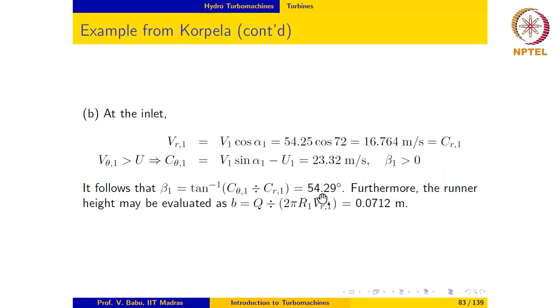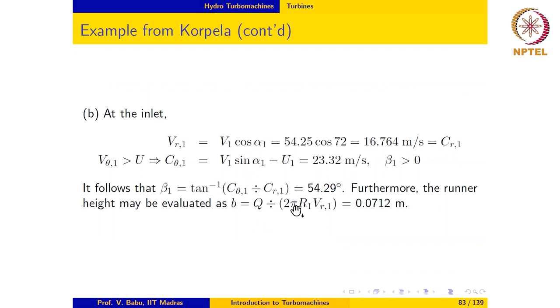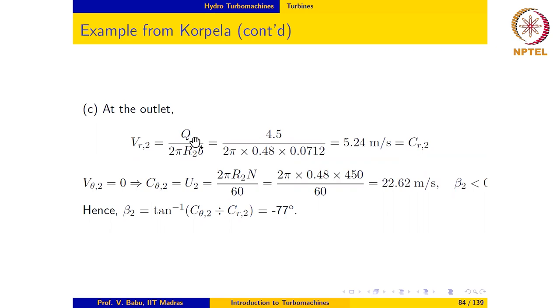Furthermore, the runner height at inlet may also be evaluated from the given flow rate. Notice that at the inlet, the flow rate Q into the runner may be written as 2πr₁ times the height of the runner which is b times the radial velocity at the inlet, so Q = 2πr₁bVr₁ from which we can calculate b as 0.0712 meters. At the outlet, the radial velocity may be evaluated as Q/(2πr₂b) and if we substitute the known values we get the velocity to be 5.24 m/s and this is the same as Cr₂.